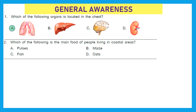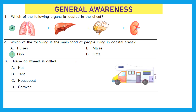Take a quick guess — what do we find most in coastal areas? It's option C, fish. Question 3: A house on wheels is called — a hut, a tent, a houseboat, or a caravan? The right answer is D — caravan.